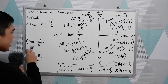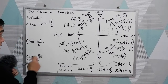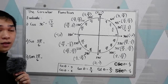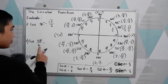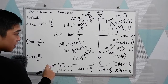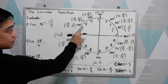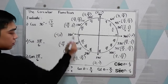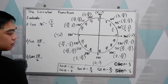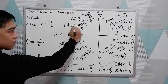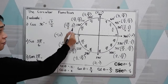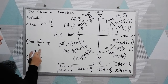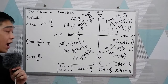Next, sine 5π/6. First step: locate our angle. It is in radian measure, so 5π/6 — its equivalent is 150 degrees. Sine is y. Looking at the coordinates, we have y equal to 1/2. Therefore, sine 5π/6 is equal to 1/2.